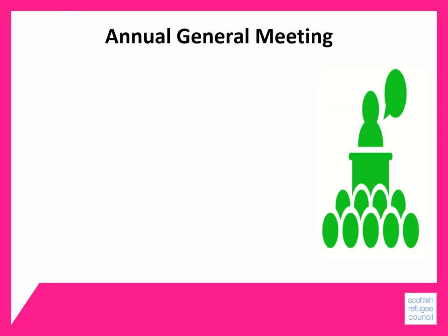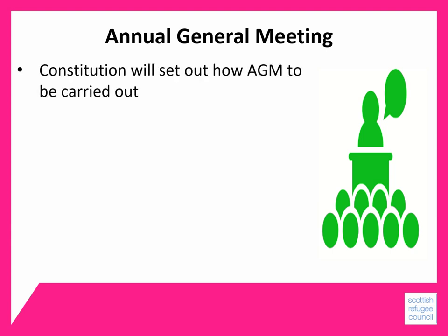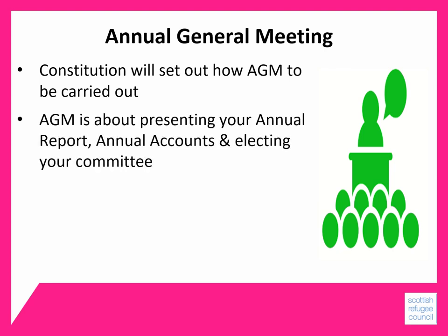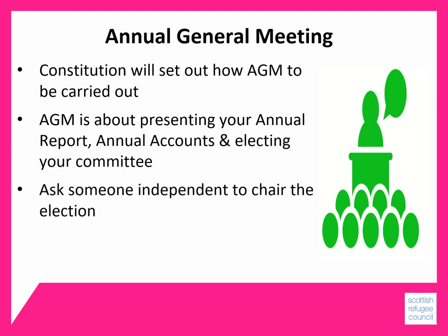An annual general meeting is a meeting of your members which takes place every year. Your constitution will set out how your annual general meeting is to be carried out. Your AGM is about presenting your annual report, your annual accounts, and electing your committee, and it's good practice to ask someone independent to chair the election.